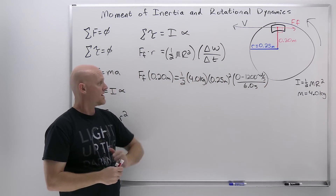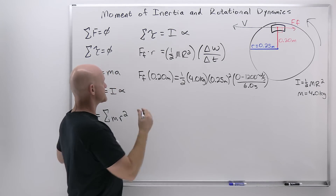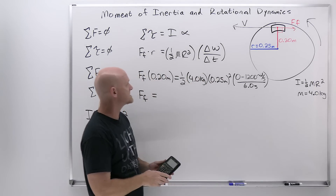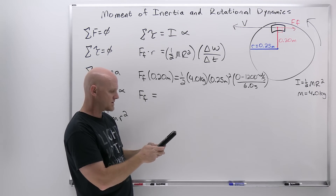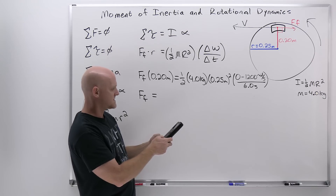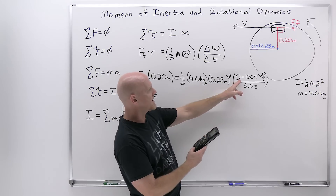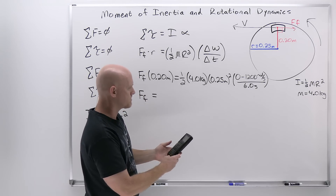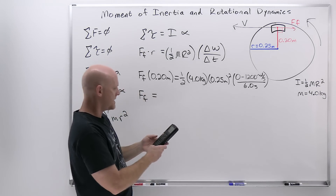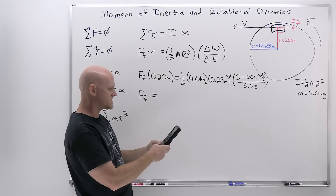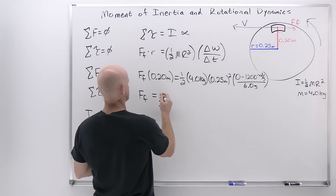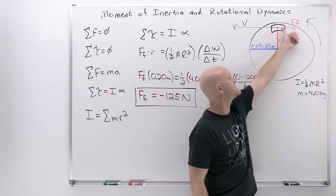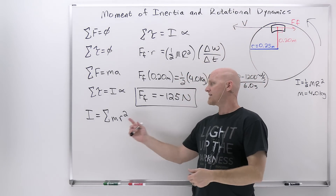Working through the calculation: one-half times four is two, times 0.25 squared times negative 1200 over six gives negative 25, then dividing by 0.20 meters (multiplying by five) gives negative 125 Newtons. The negative sign is purely directional — the velocity of the disc is in one direction and kinetic friction always opposes the motion, pointing in the opposite direction. So the average force of kinetic friction applied by the brake pads is 125 Newtons.